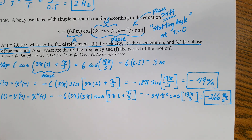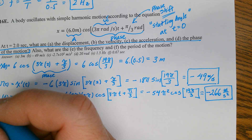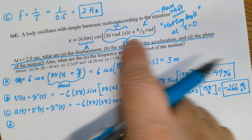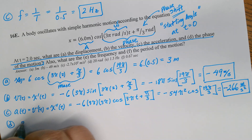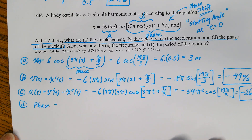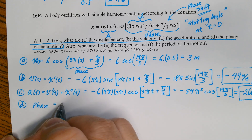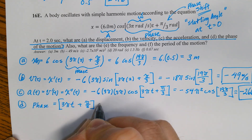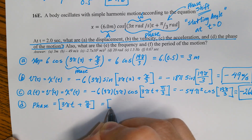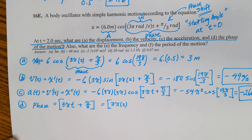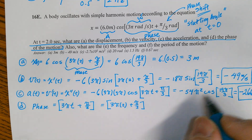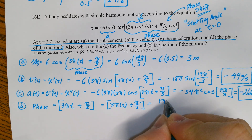For Part D — the phase of the motion — the phase is the entire argument: 3πt + π/3. At t = 2 seconds: 3π·2 + π/3 = 19π/3, which we've already used many times. You can leave it as 19π/3 or convert to approximately 19.9 radians.